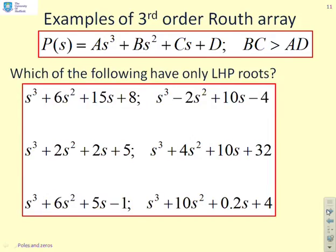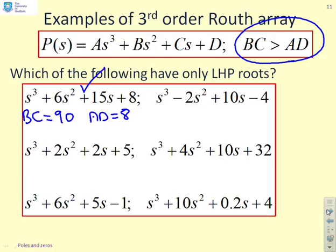Here are some examples for us to try. Which of these have only left half-plane roots? I'm just going to use this formula, BC greater than AD, and write things down. In this case, BC equals 6 times 15, which is 90. AD equals 8. Clearly, BC is bigger than AD, so this one is good. What about the next one? I can see a negative coefficient and a negative coefficient. So this one is bad. I don't need to use the Routh array. As soon as I see negative coefficients, I know there must be at least one right half-plane factor. Next one. BC equals 4, that's 2 times 2. AD equals 5. In this case, AD is bigger than BC, so this must include a right half-plane factor. And you'll see how easy that computation was. And all positive coefficients, yet it includes a right half-plane factor.